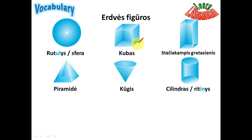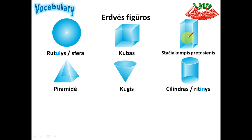Stačiakampis gretasienis — a rectangular cuboid. 'Greta' means close to and 'sienos' means walls. So this is a rectangle whose walls are close to each other. The correct stress is 'stačiakampis', but mostly people say 'stačiakampis'. Stačiakampis gretasienis.